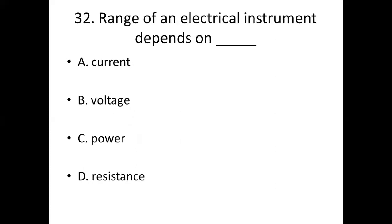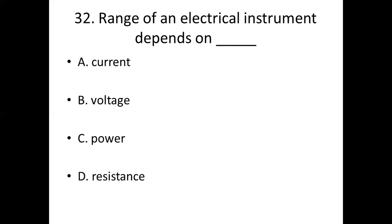32nd bit. Range of an electrical instrument depends on dash. Option A: current. Option B: voltage. Option C: power. Option D: resistance. Answer: Option A, current.